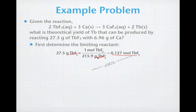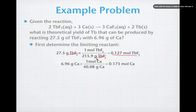Our second reactant is the calcium. The calcium is 6.96 grams of calcium, one mole over 40.08 grams of calcium, and that leaves us with 0.173 moles of calcium to react with. Now let's compare our ratios.